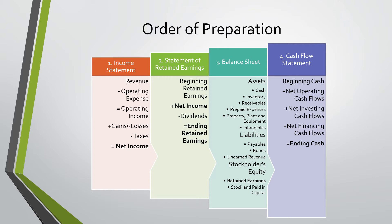The second statement is the statement of retained earnings. This equals beginning retained earnings plus net income minus dividends, which equals ending retained earnings.